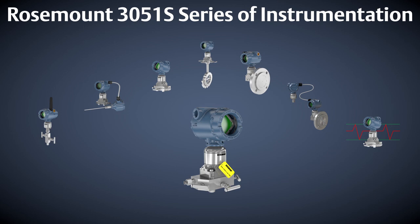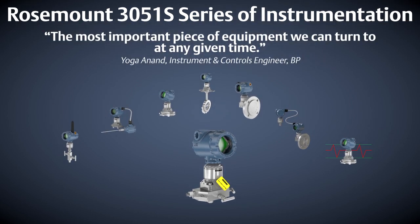But don't take our word. Just listen to BP who said, "The Rosemount 3051S is the most important piece of equipment that we can turn to at any given time, knowing that we can get the accuracy, reliability, and continued performance for any process measurement."